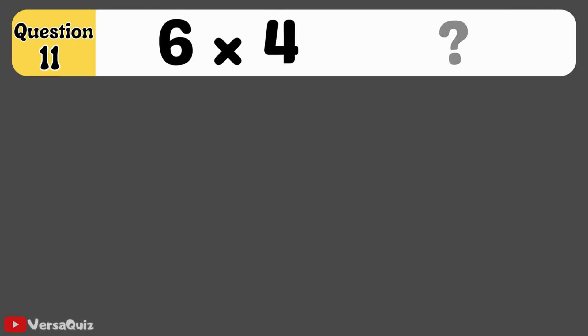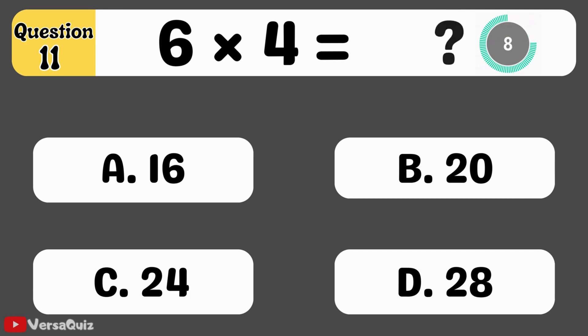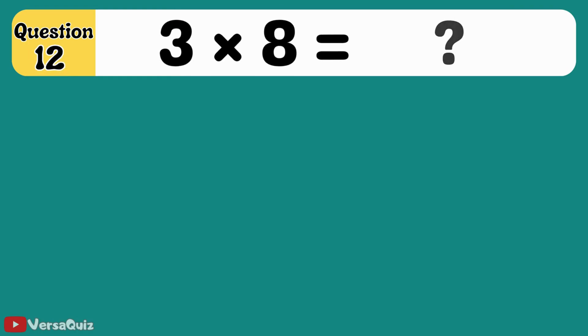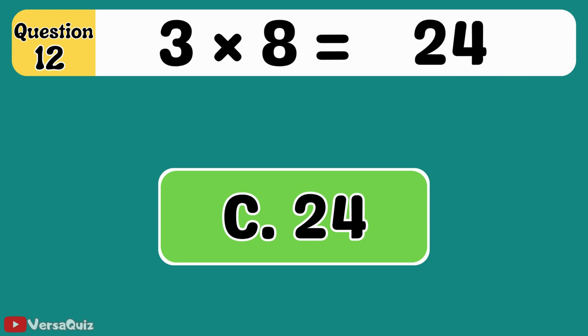Next question. What is 6 times 4? 24. 6 times 4 equals 24. 3 times 8 is equal to... 24.